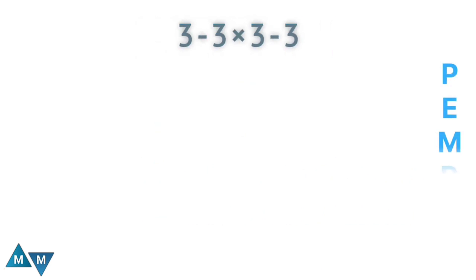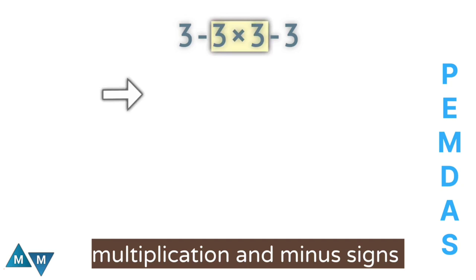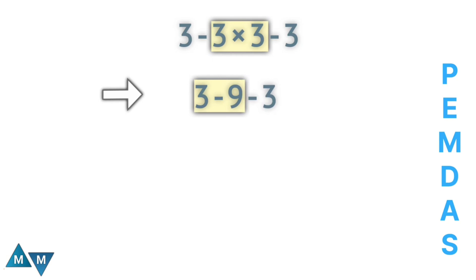So in this expression, we have a multiplication sign and a minus sign. Since multiplication has higher priority, three times three is our first move, which equals nine. Now we have three minus nine minus three. The expression only contains minus signs, so it's solved left to right. Three minus nine equals minus six. Then minus six minus three equals minus nine. This is our final answer.